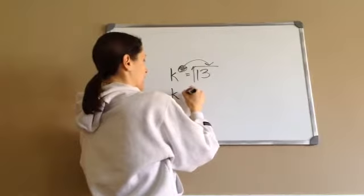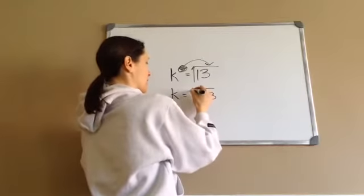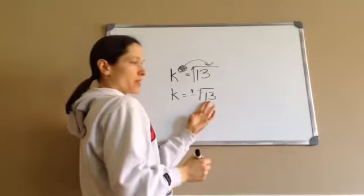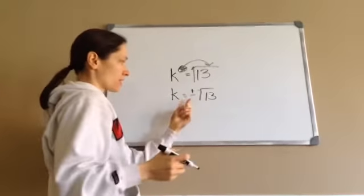So then K equals square root of 13. And again, same as that, nothing will go into 13 twice the same number. So it's plus negative, positive negative square root of 13.